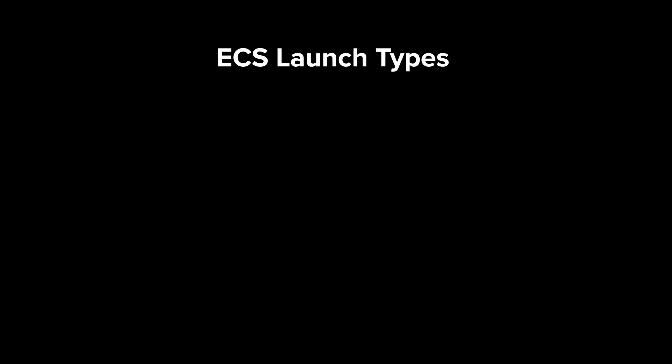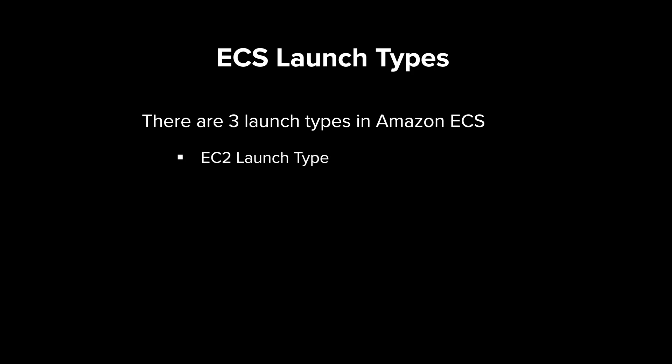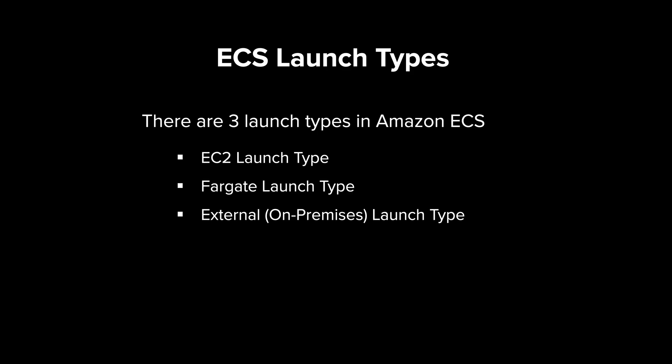Now let's look at the launch types, or capacity providers, supported by Amazon ECS. Amazon ECS supports three main capacity providers. First, the EC2 launch type, where you manage the underlying infrastructure yourself using Amazon EC2 instances. Second, the Fargate launch type, which is serverless — you don't manage the infrastructure at all, just the tasks. And finally, the external launch type, which lets you run ECS tasks on your own on-premises servers using ECS Anywhere.